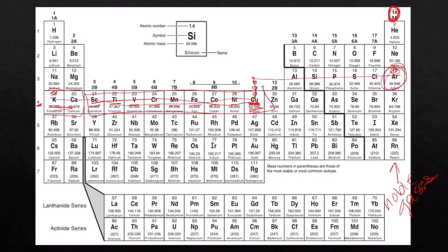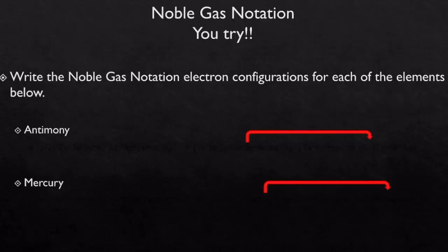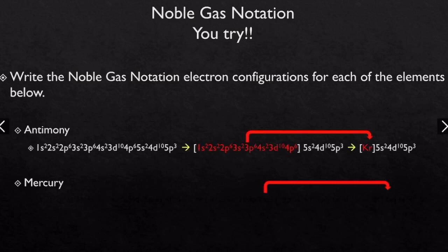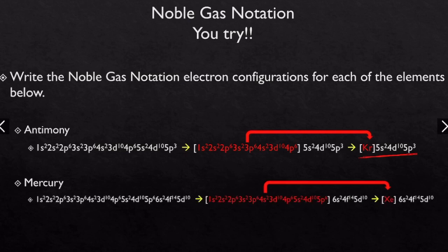Now write the noble gas configurations for antimony and mercury. For antimony, the noble gas before it is krypton, so the answer is [Kr] 5s2, 4d10, 5p3. For mercury, the noble gas is xenon, so the answer is [Xe] 6s2, 4f14, 5d10. If you're not sure what you missed on any of these example problems, write yourself a note and we can talk about it in class.